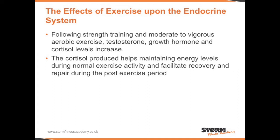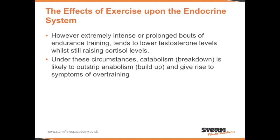Following strength training and moderate to vigorous aerobic exercise, testosterone, growth hormone, and cortisol levels increase. The cortisol produced helps maintain energy levels during normal exercise activity and facilitates recovery and repair during the post-exercise period. However, extremely intense or prolonged bouts of endurance training tends to lower testosterone levels while still raising cortisol levels. Under these circumstances, catabolism is likely to outstrip anabolism, giving rise to symptoms of overtraining.